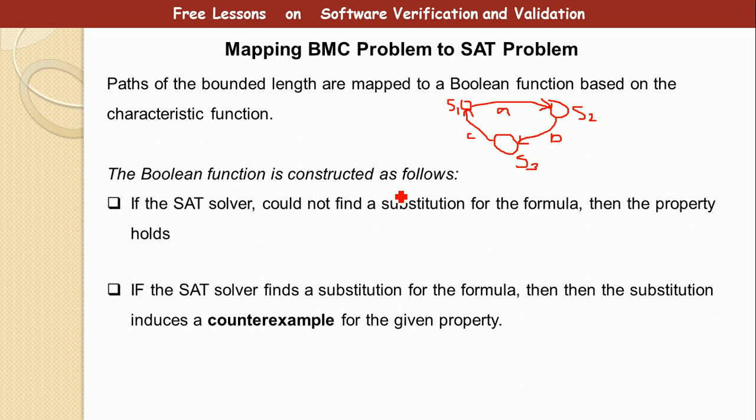The Boolean function is constructed as follows: If the SAT solver could not find a substitution for the formula, then the property holds. If the SAT solver finds a substitution for the formula, then the substitution induces a counterexample for the given property.